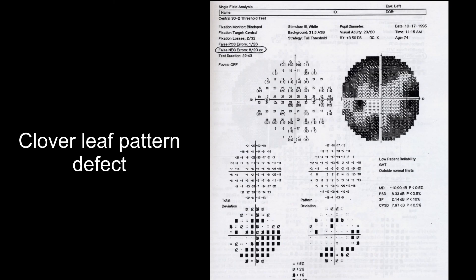This is a typical pattern that we see in patients with high false negatives. As you can see, the patient responded to the four initial points and then stopped responding. This is called cloverleaf pattern defect, which is typical for false negative.